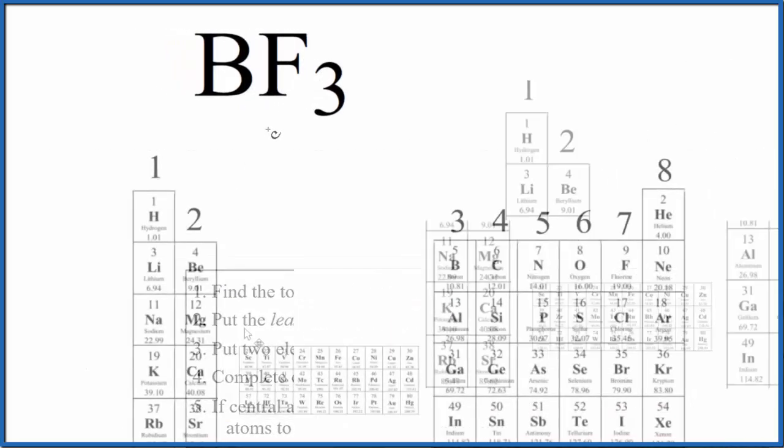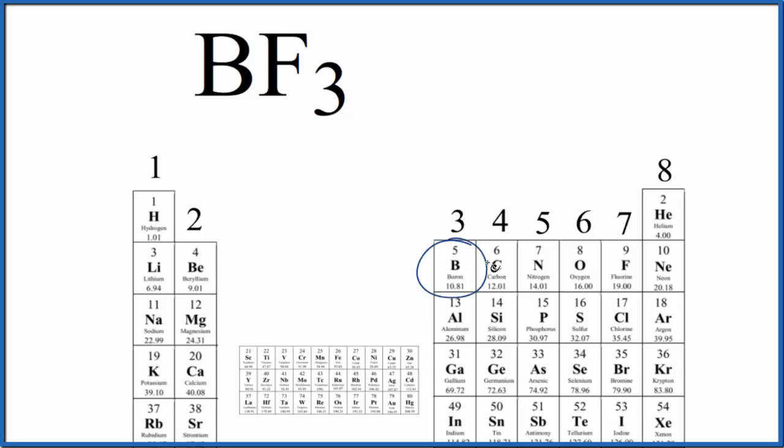Let's look at the periodic table. So boron, that's right here, group 13, sometimes called 3A, that has three valence electrons. Fluorine, that's in group 17, sometimes called 7A. These elements, they have seven valence electrons.